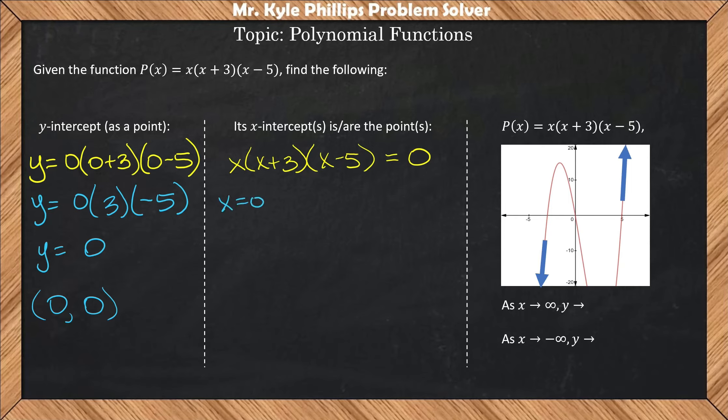So we have x equals 0, x plus 3 equals 0, and x minus 5 equals 0. So here, we have one x-intercept at 0, we have another x-intercept at negative 3, and we have our last x-intercept at positive 5.